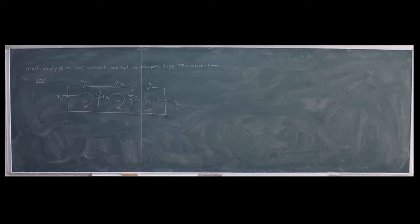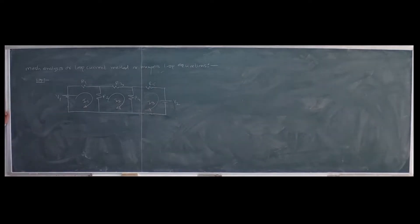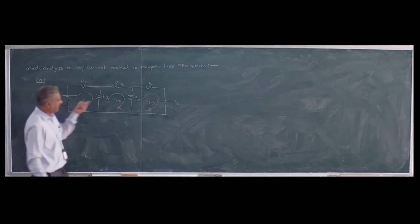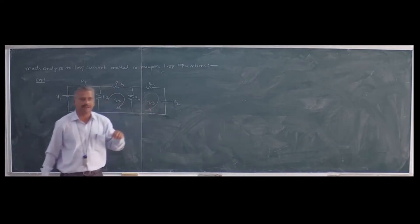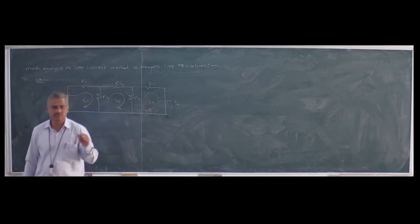The assumption in this method is that each loop of the network has its own current — meaning the number of loops equals the number of loop currents. Equations are then prepared for these loops by applying KVL to each loop.